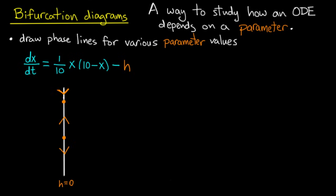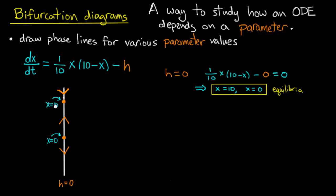So let's look first at the phase line for h equals 0. So it looks like this. And the equilibria are at x equals 0 and x equals 10. And how would I find those?